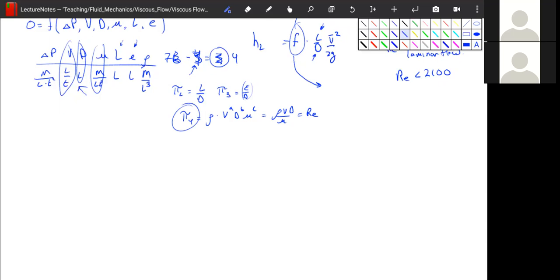Our pressure is a little bit wonky. So our pi one is going to be equal to our delta P times V times V to the A, D to the B, and mu to the C, which is equal to mass per length time times length per time to the A power times length to the B power times mass per length time to the C power.